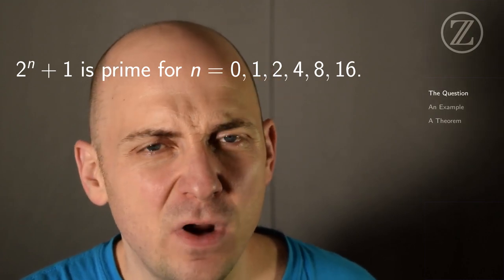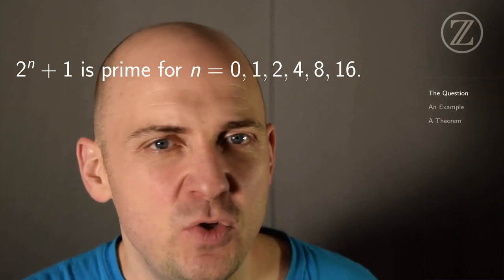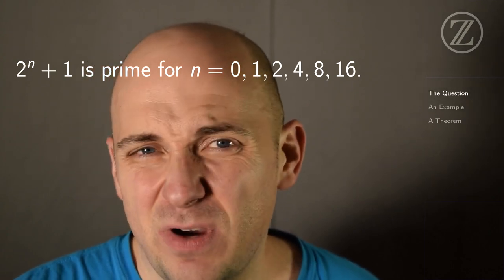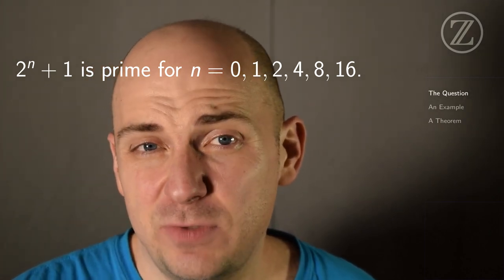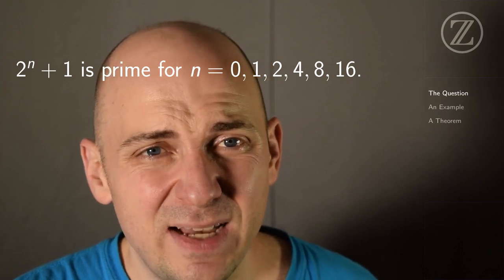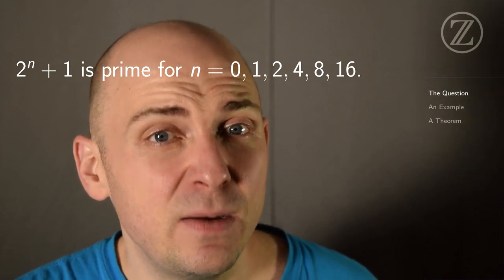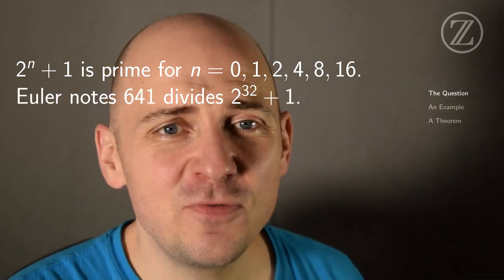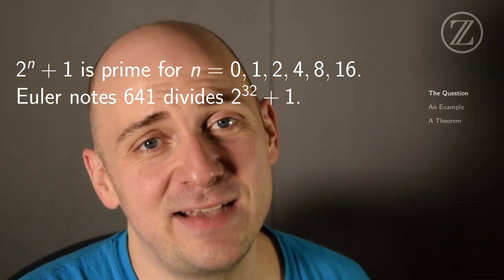So you might wonder, what other choices of n could I make so that 2 to the n plus 1 is prime? Unless n equals 0, that n has to be a power of 2. So your natural next guess might be that 2 to the 32nd power plus 1 is prime. But Euler showed that 641 divides 2 to the 32nd power plus 1.